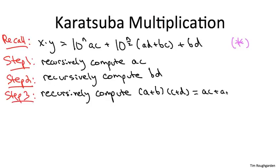Now here is the key observation in Karatsuba multiplication, and it's really a trick that goes back to the early 19th century mathematician Gauss. Let's look at the quantity we computed in step three and subtract from it the two quantities that we already computed in steps one and two.